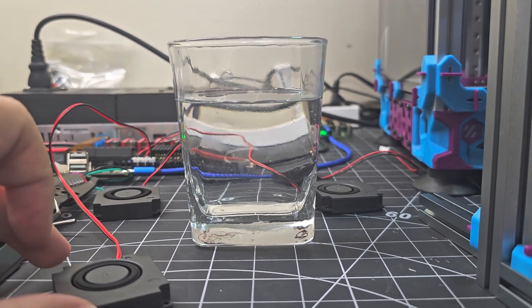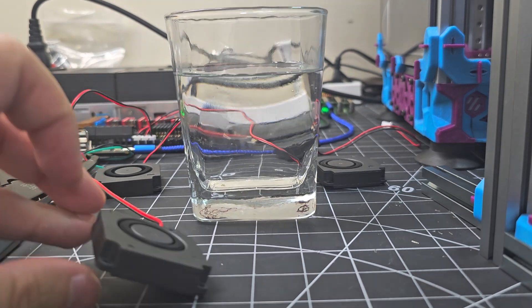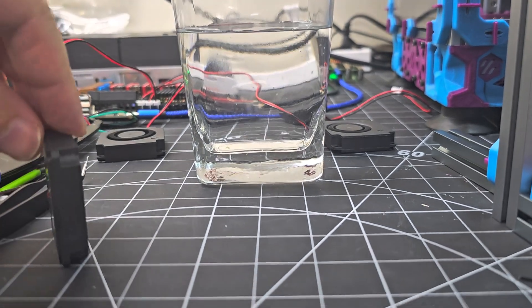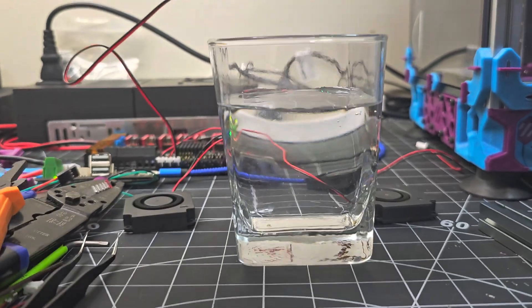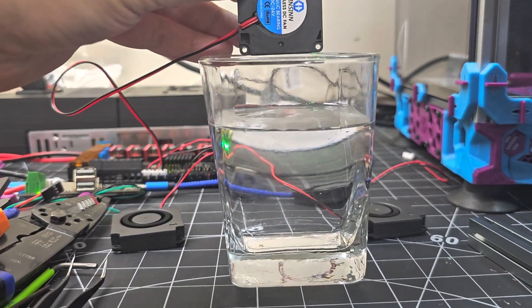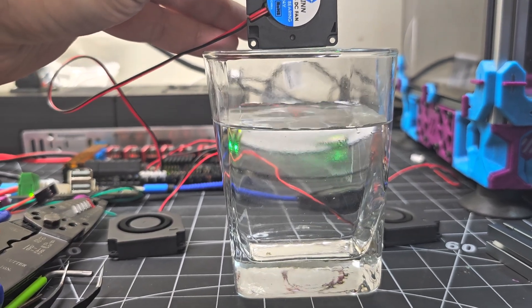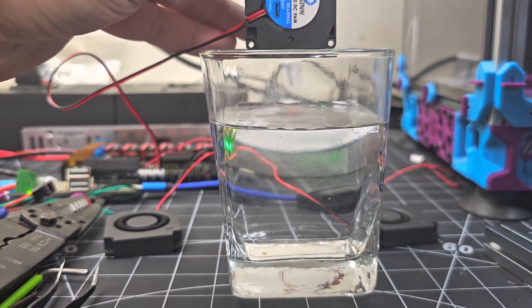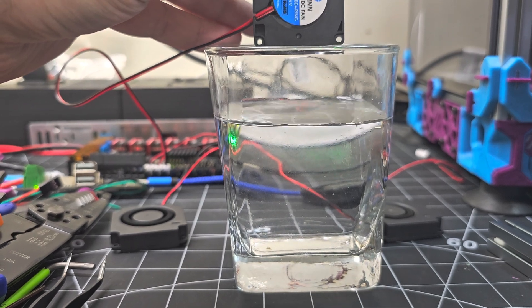All right, without any further ado, let's start with the Winsin fan. Now I'm going to try and suspend it just above the surface of the glass right about there, and I'll do my best to hold the other two fans at the same position.